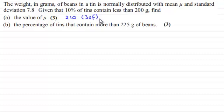So in this question, we've now got to go on and find the percentage of tins that contain more than 225 grams of beans for three marks. So if you'd like to have a go at this, haven't done so already, I'll just give you a moment then to pause the video.